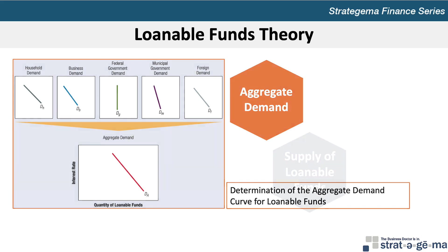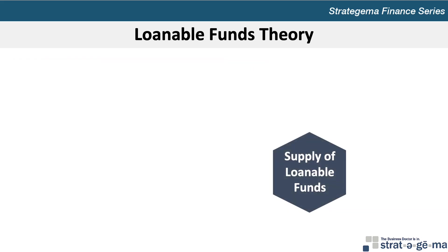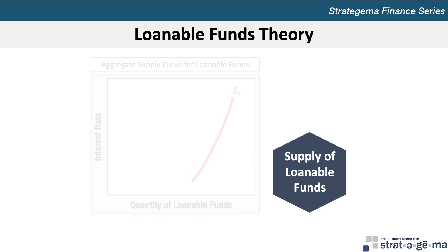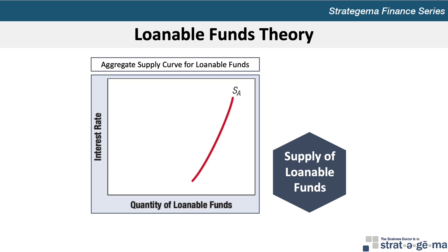The term supply of loanable funds is commonly used to refer to funds provided to financial markets by savers. The household sector is the largest supplier of such funds, but loanable funds are also supplied by some governments that temporarily generate more tax revenues than they spend, or by some businesses whose cash inflows exceed outflows during a particular period. Although households as a group are a net supplier of loanable funds, governments and businesses are net demanders of loanable funds. This means that the supply of loanable funds schedule, also called the supply curve, is upward sloping, as shown in this exhibit.